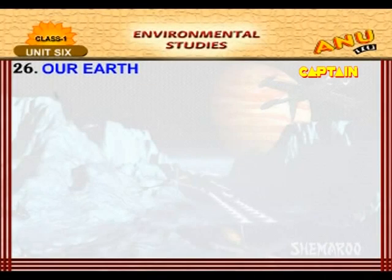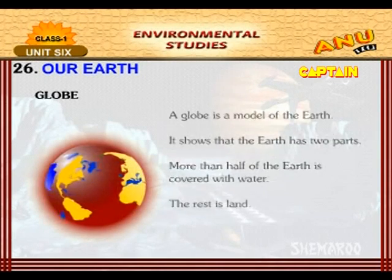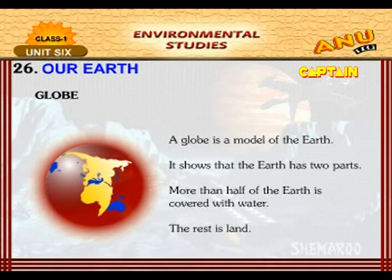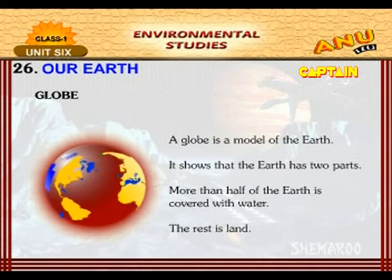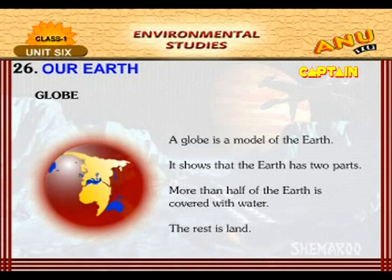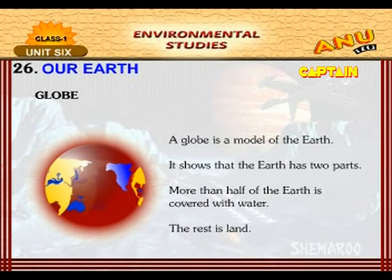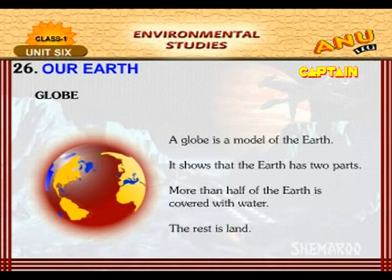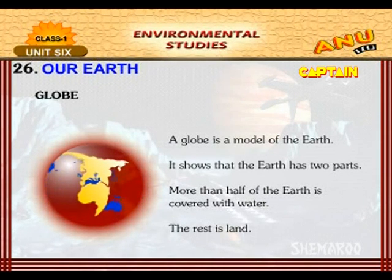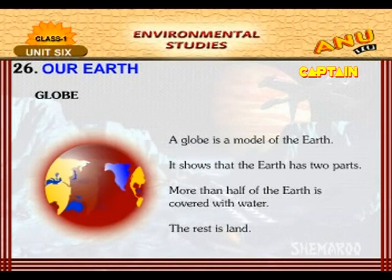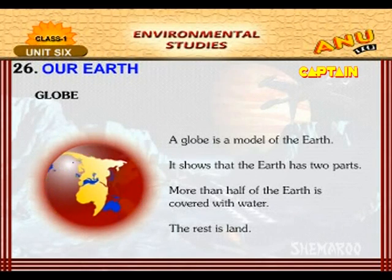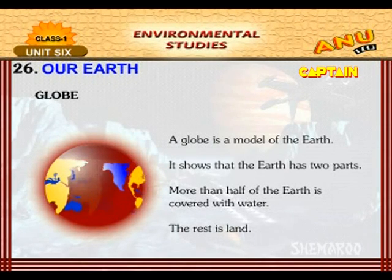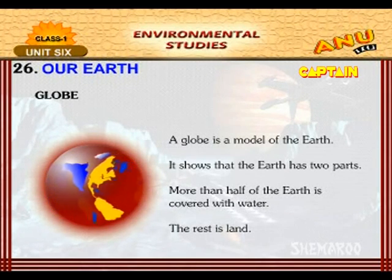Our Earth. A globe is a model of the earth. It shows that the earth has two parts. More than half of the earth is covered with water. The rest is land.